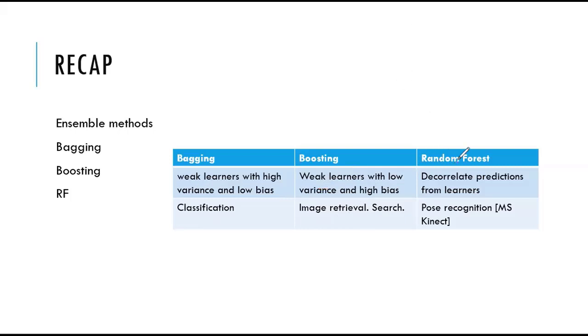Both bagging and boosting take long to train. On the other hand, random forests can be easily parallelized and faster to train. The key idea for random forest is that it decorrelates predictions from learners.